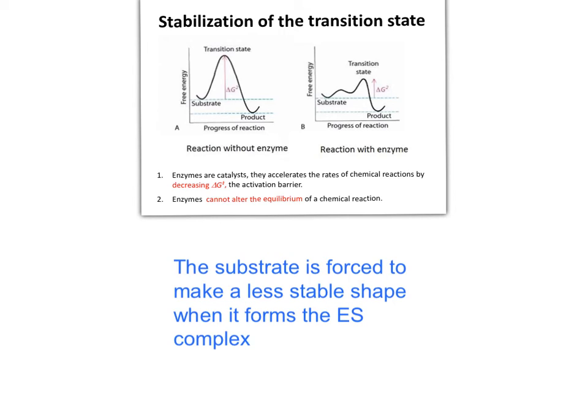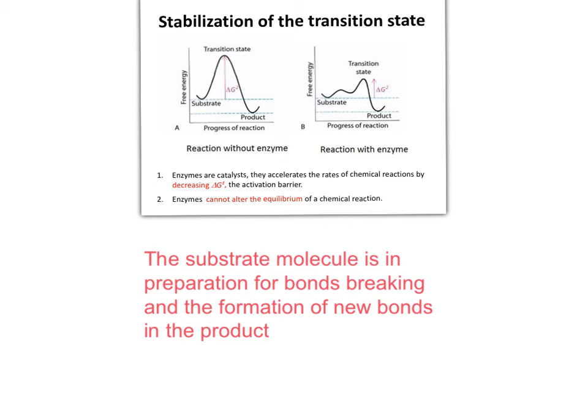making a molecule that is less stable, which is easier to break bonds. In the transition state, the substrate is in preparation to break bonds and the product is in preparation for formation.